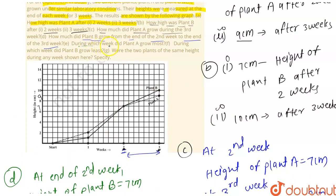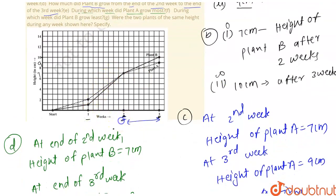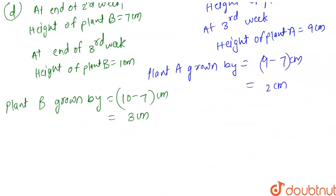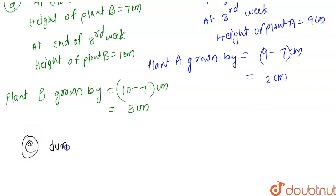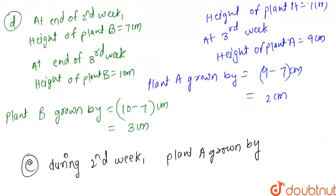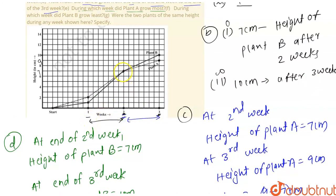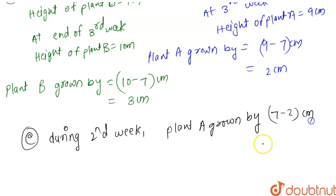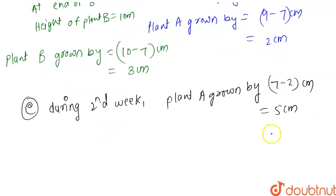For Part E: during which week did Plant A grow the most? From the end of week one to the end of week two, Plant A grew from 2 cm to 7 cm, a growth of 7 minus 2 equals 5 centimeters. So we can say that during the second week, Plant A grew the most.